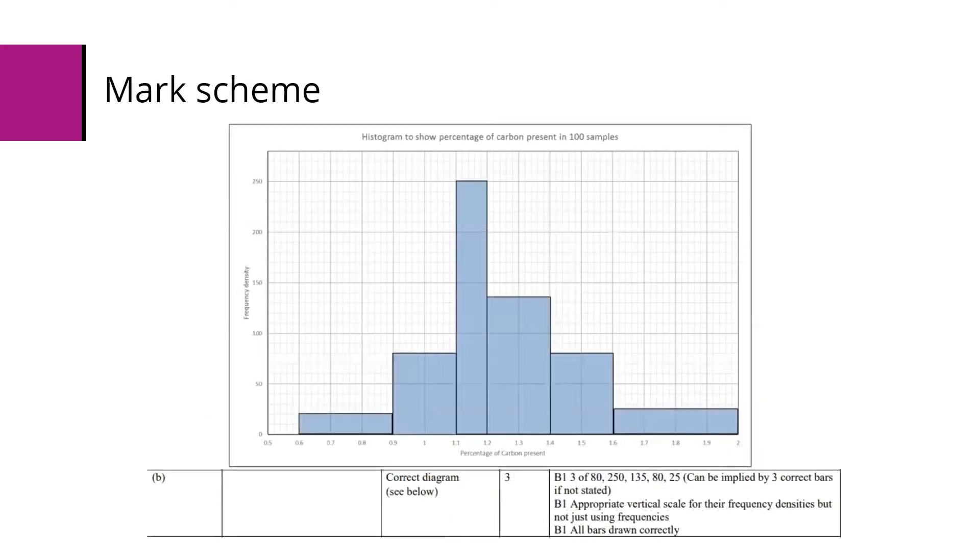The mark scheme for this one is saying there's a B1 mark for calculating the frequency densities, or at least three of them anyway, a second one for choosing an appropriate scale on the vertical axis, so even if students have incorrectly calculated some frequency densities, as long as they've chosen a suitable scale for their values they'll get that mark, and then the third one is for correct bars drawn.